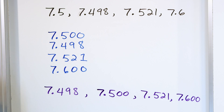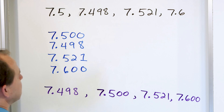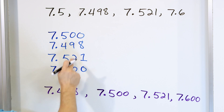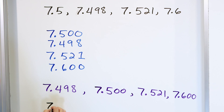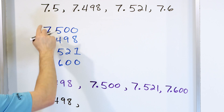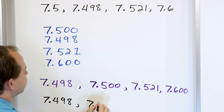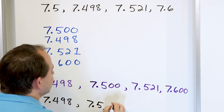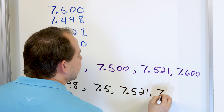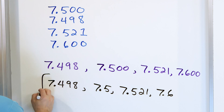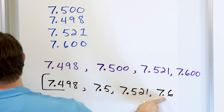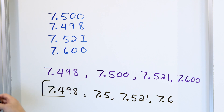We padded all these digits to make them comparable, so now we go back to the original problem. 7.498 was given in the problem, so we keep that. 7.500 was really 7.5. 7.521 was in the problem. And 7.600 was really written as 7.6. These are the numbers in order of least to greatest: 7.498, 7.5, 7.521, and 7.6.